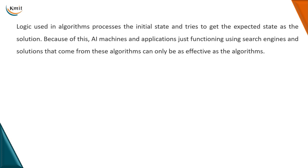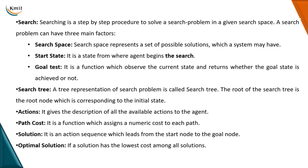Various logics are used in these algorithms for processing the initial state to reach the final state and give a solution. Searching is a step-by-step procedure within a given search space. There are three main factors involved in searching: first, search space — which represents all possible solutions a system may have; second, start state — the state from where the agent actually begins searching for the solution; and third, goal test — a function which observes the current state and returns whether the final state has been reached.